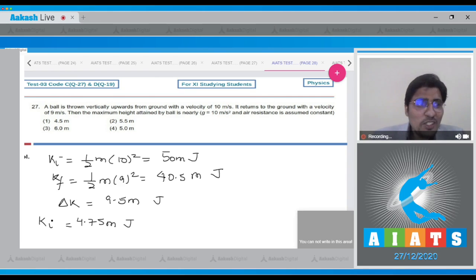Hence, the energy of the ball at the highest point can be easily written as energy at highest point. Let us represent this by E, will be equal to 50 minus 4.75, and this will be equal to 45.25 m into j.